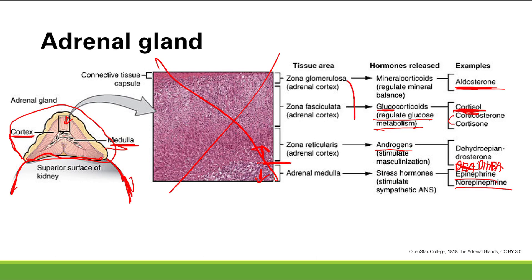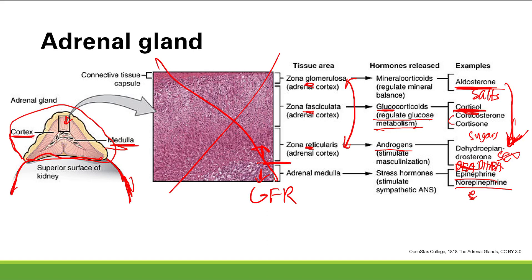To review, the three layers of the adrenocortex follow the mnemonic GFR: zona Glomerulosa, zona Fasciculata, and zona Reticularis. You can remember what each layer makes with 'salt, sugars, and sex.' The deeper you go, the sweeter it gets. And then finally, the adrenomedulla makes epinephrine and norepinephrine.